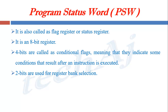Next, 2 bits are used for register bank selection. In RAM memory organization, we have seen that 8051 has 4 different register banks, but only 1 register bank is active at a time. So to select 1 bank from those 4 register banks, these 2 bits are used. The remaining 2 bits are unused bits.